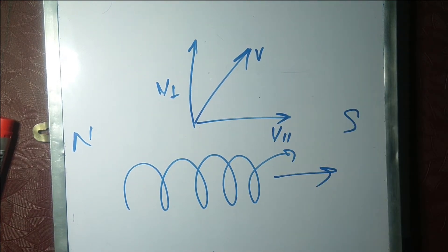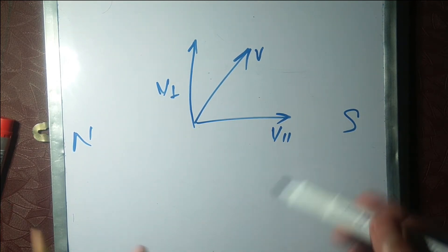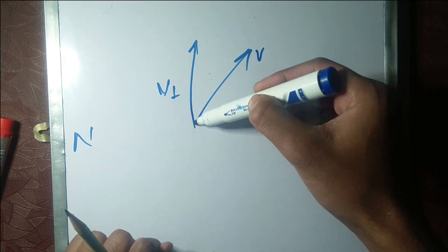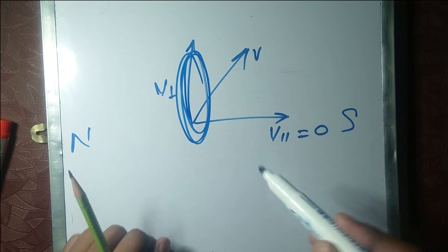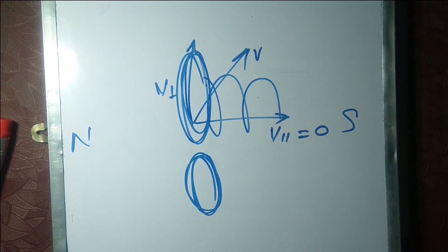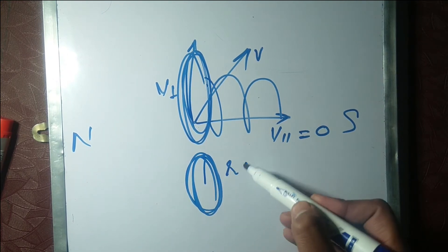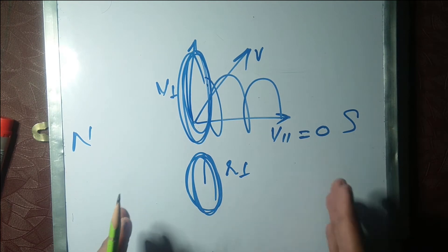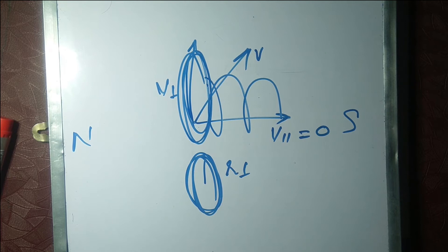When v-parallel is neglected, the particle only moves in a circular path. When v-perpendicular is zero, we don't consider that component, so the motion will be only along v-perpendicular and it will move in a circle. This will be the Larmor radius. Now we are going to place our charge in a time-varying magnetic field — a magnetic field which is changing with respect to time — since we are studying single particle motion in chapter two of F10.